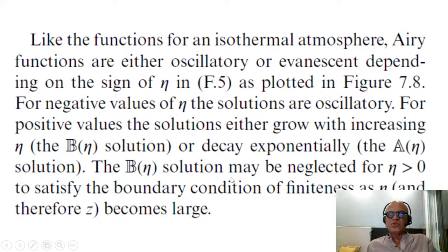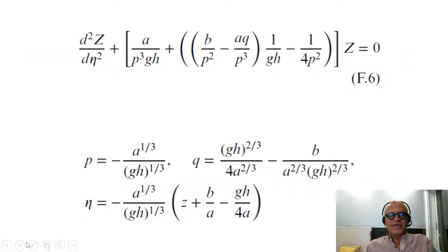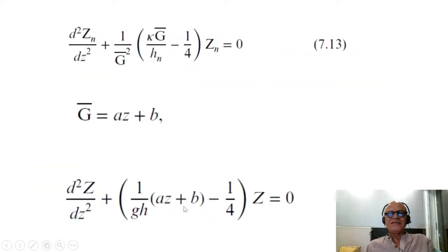The b eta solution may be neglected if eta is greater than zero because you don't want growing solutions to satisfy the boundary condition of finiteness as eta or z becomes large. Eta is a function of z here, so obviously directly related. That's our vertical function, that's our vertical structure, that's what our equation will look like when we replace that in here and in here.